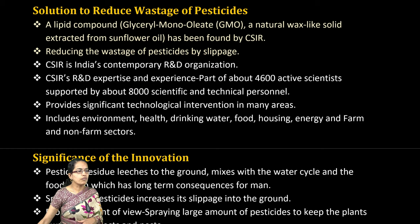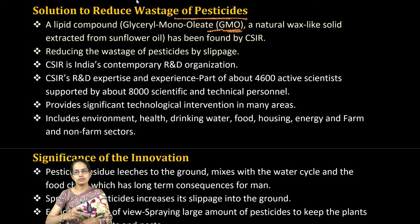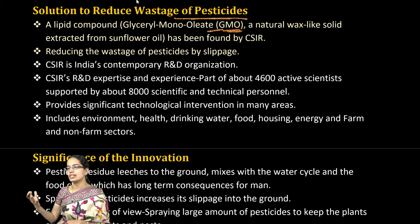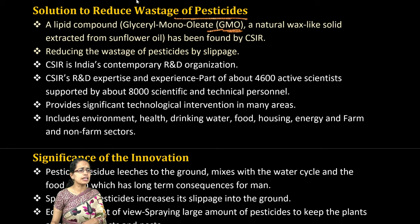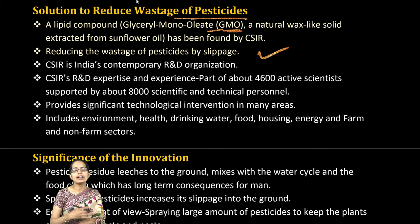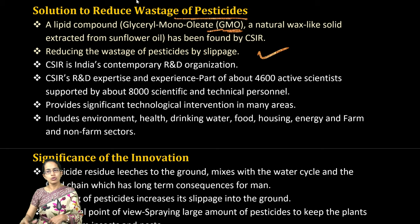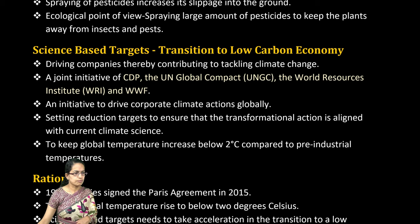The next is how we are trying to reduce the wastage of pesticides. GMO, which is glyceryl monooliate, is a natural wax similar to the extract of sunflower oil. This has been developed by CSIR and reduces the spillage and wastage of pesticides. The pesticide residue leaches into the ground, mixes with the water system, and has long-term consequences on human life. Using GMO to reduce this is one of the major developments seen.